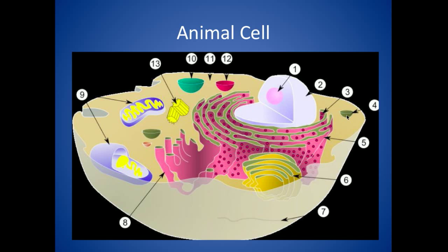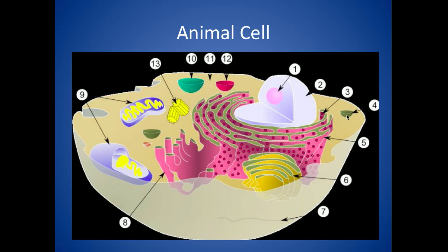So this is the PowerPoint. This is the overall animal cell. A lot of the questions I'll ask you will probably come off this slide specifically — like probably the nucleus, nucleolus, probably the Golgi complex, maybe even the mitochondria, stuff like that will probably come off of this, and the matrix in there.